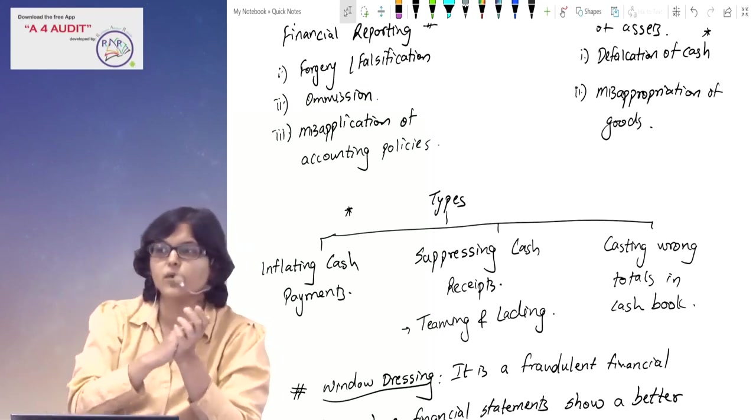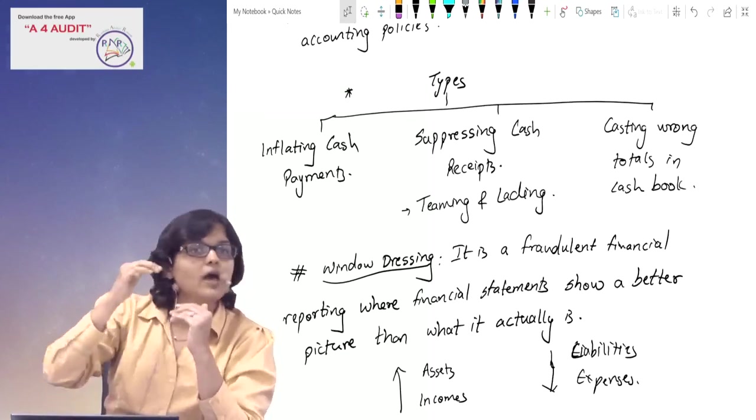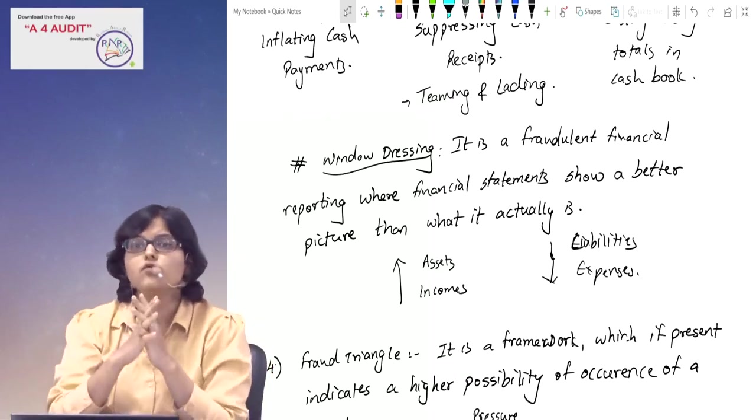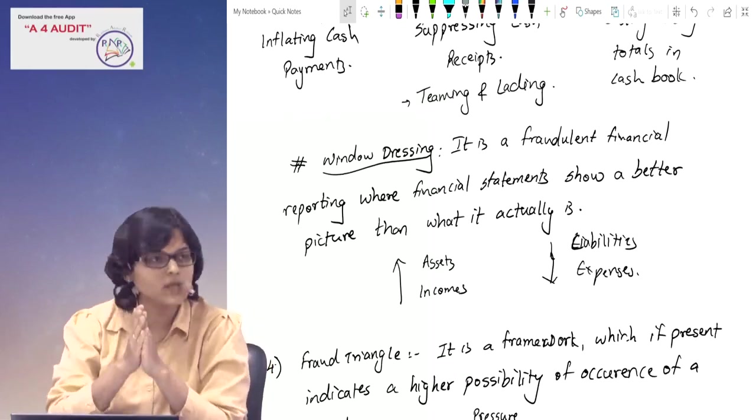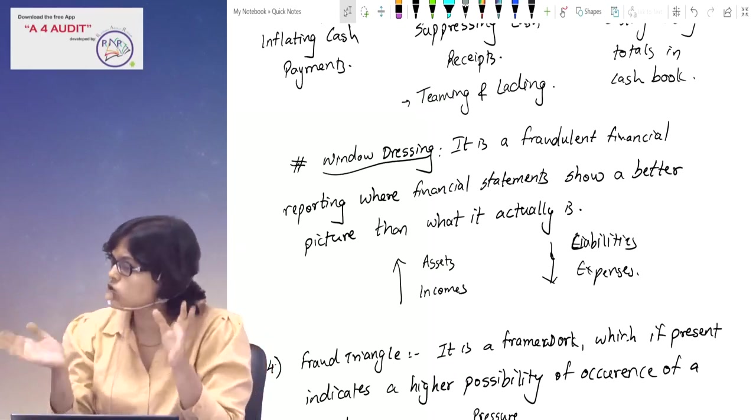Suppression of cash receipts - one point we have said: teaming and lading. Simple interpretation of teaming and lading. Then we have said window dressing is also a type of fraudulent financial reporting. It shows a better financial position than what it actually is.